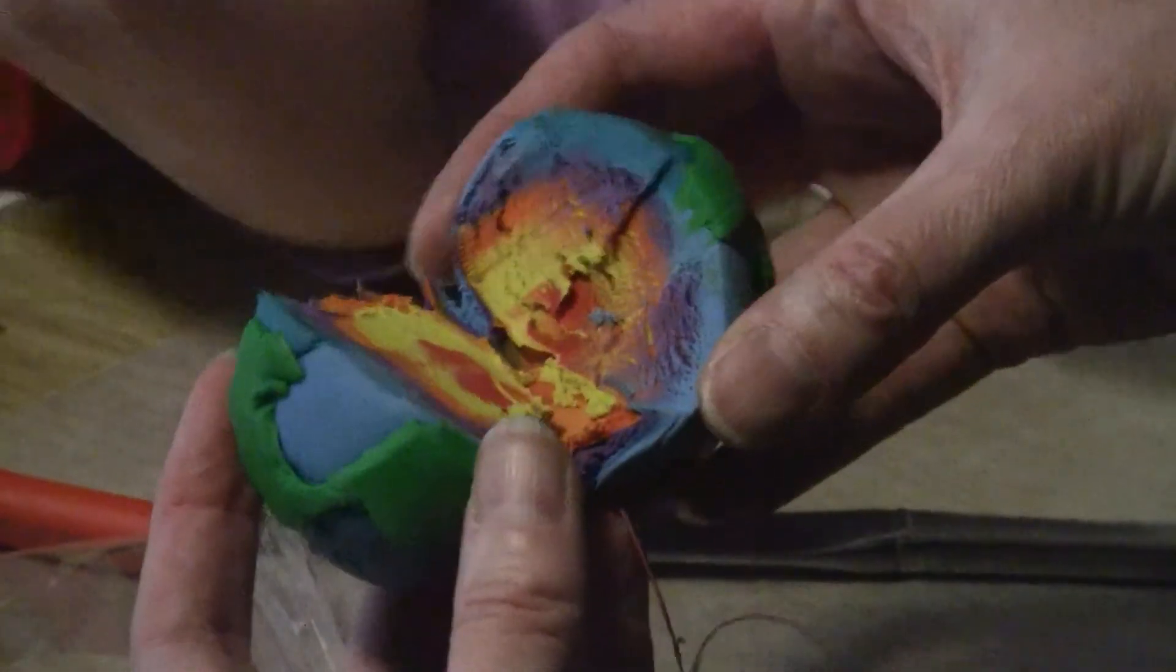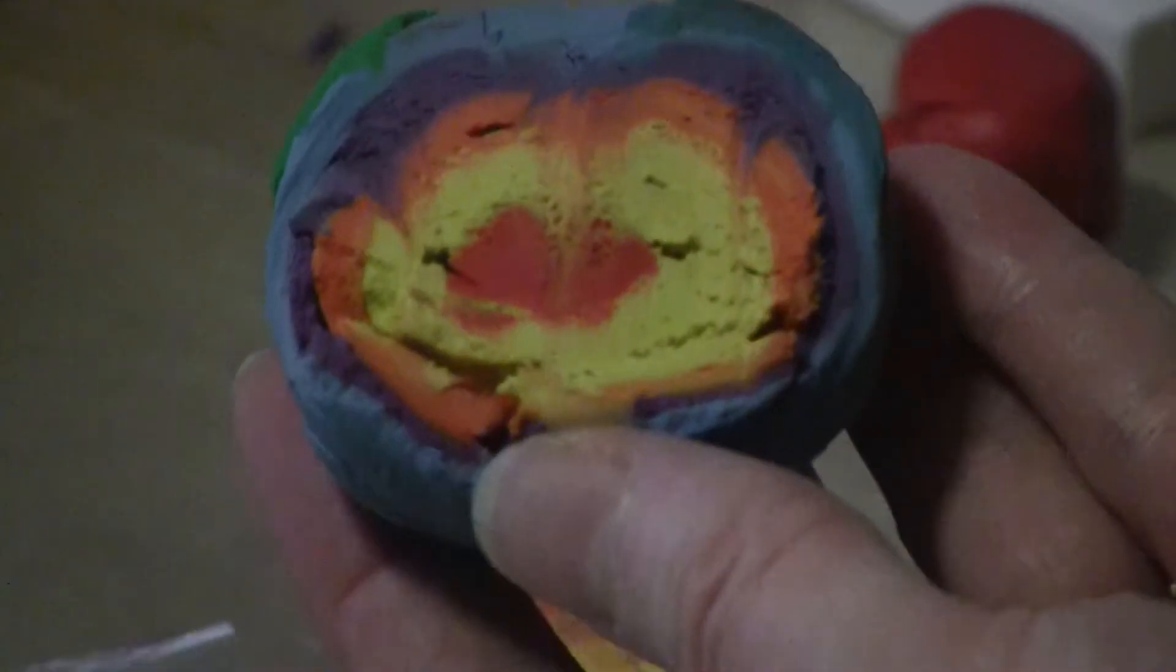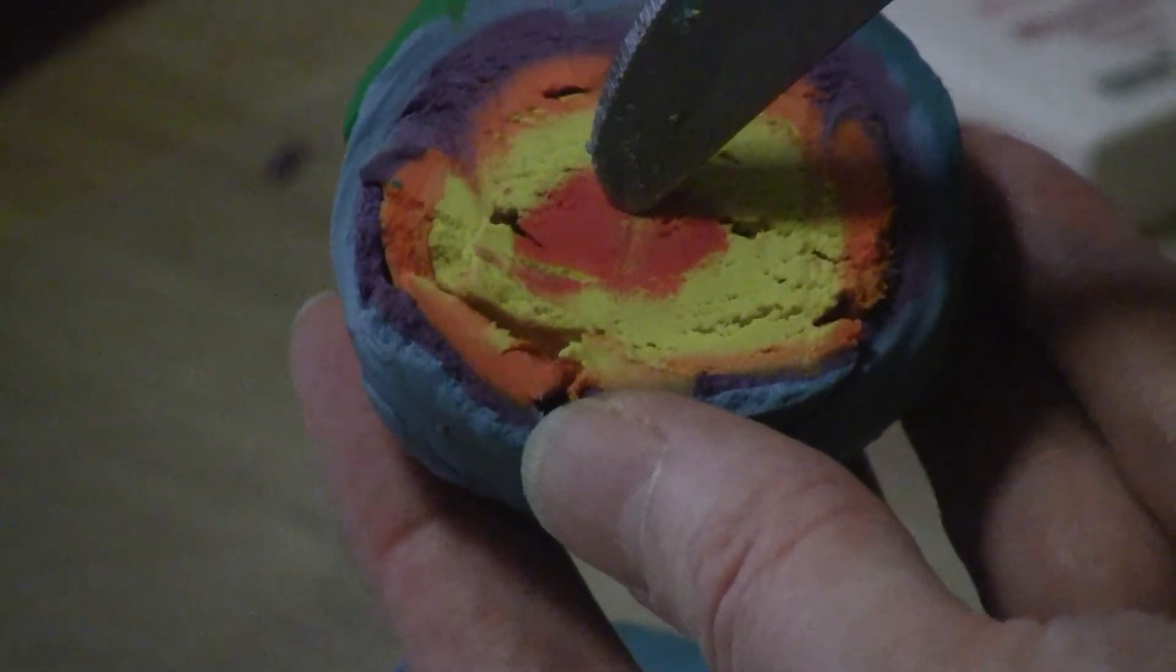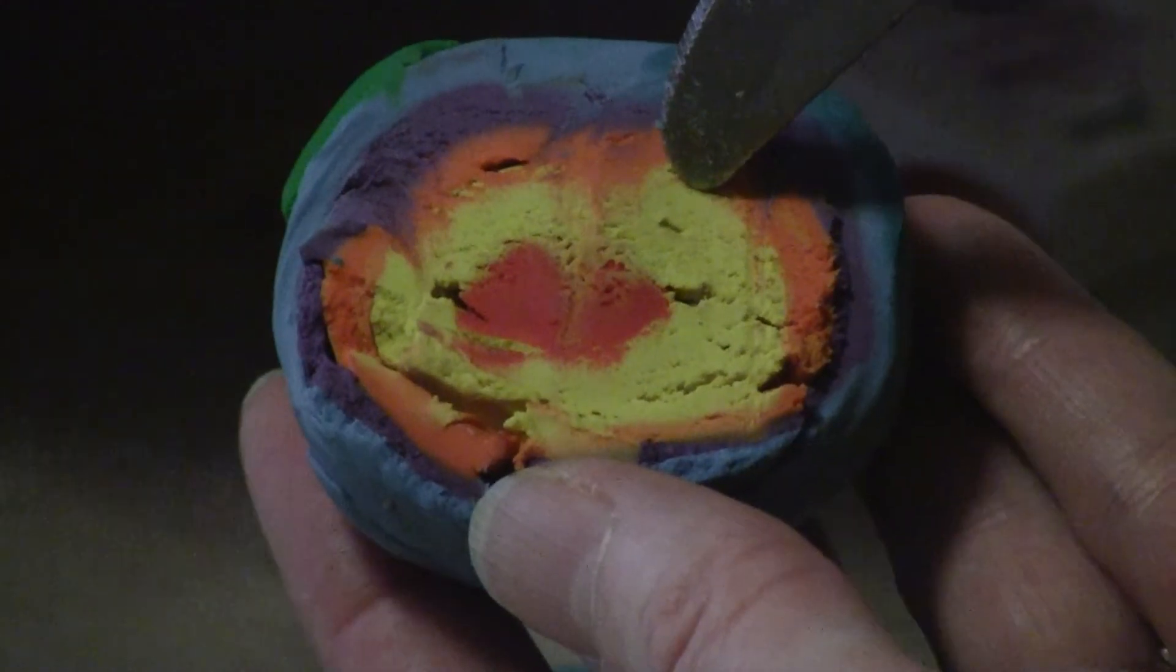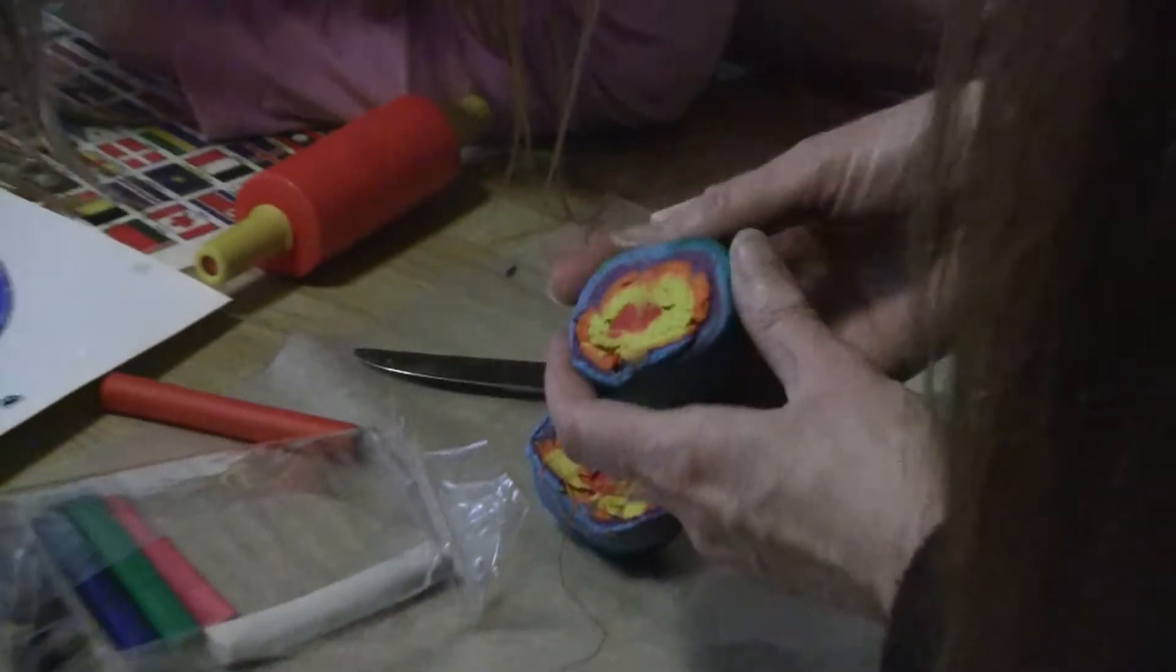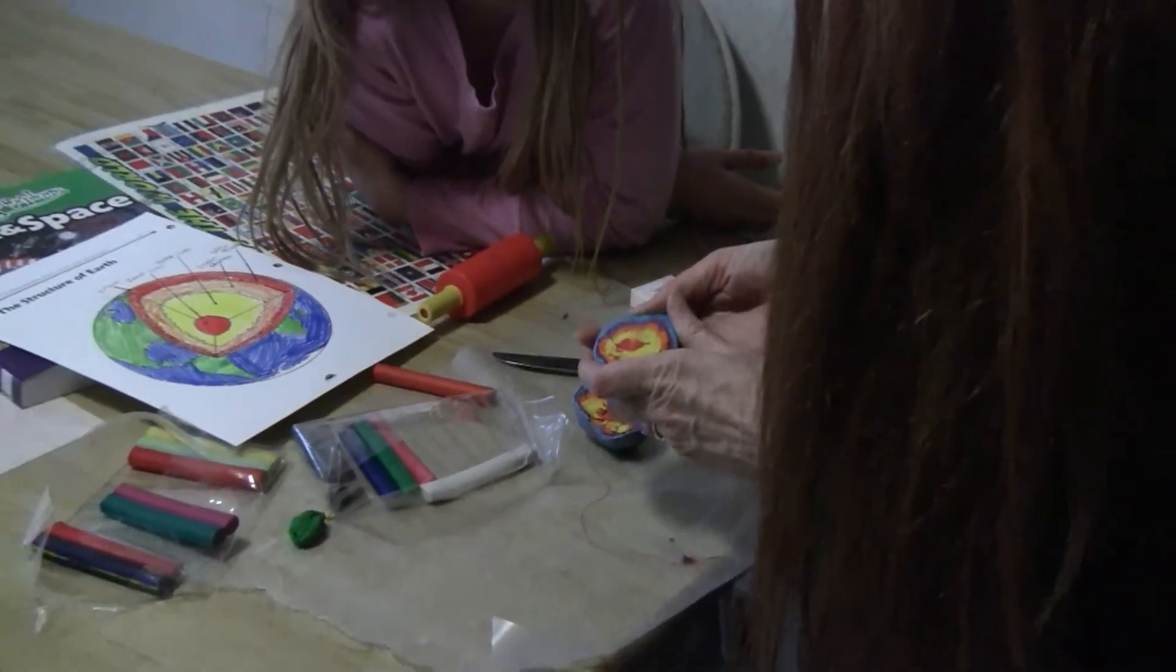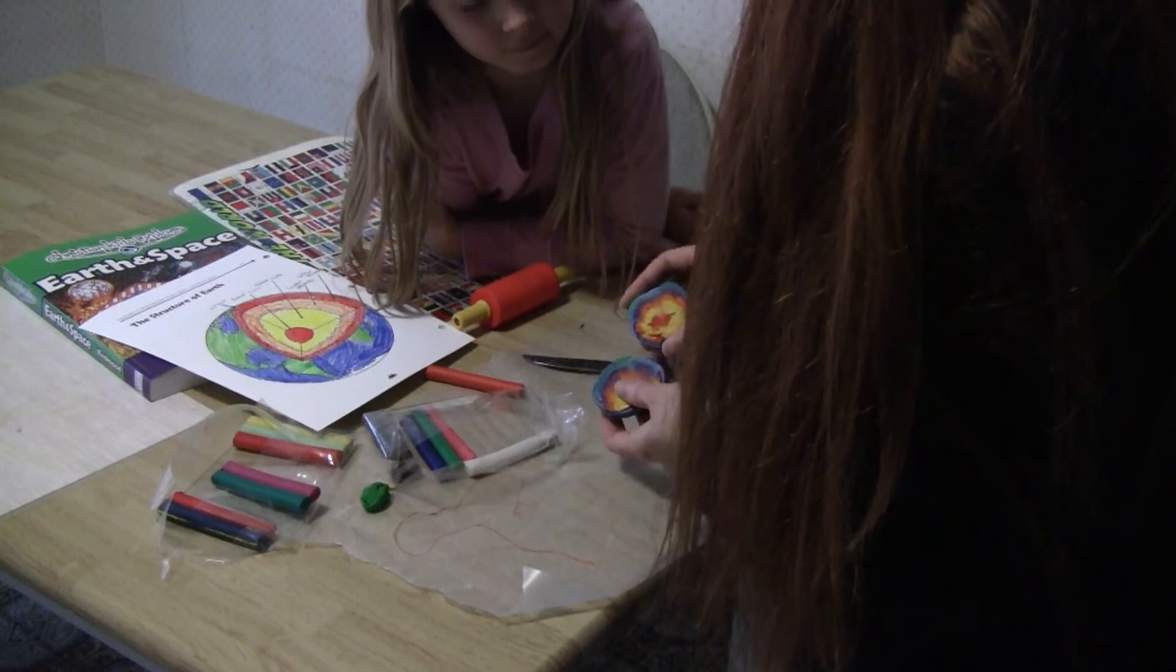But there you have the layers of the earth. You have the inner core. Right there you have the inner core. You have the outer core. You have the lower mantle, upper mantle, and then the crust along the top that needs to be a bit thinner. Or the water. So there you have it, a clay earth.